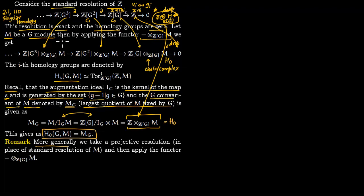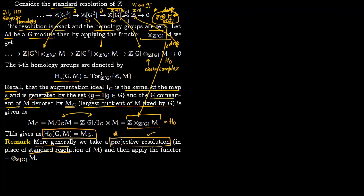More generally, rather than taking a free resolution we can take a projective resolution. But since all these modules in the standard resolution are free, it is also a projective resolution. For computations you take the standard resolution because we know how to deal with it — we know all the boundary maps since they just come from standard algebraic topology homology. So more generally, books say projective resolution in place of standard resolution. If you have a projective resolution you do the same story: you have projective modules, apply the tensor functor, get a complex, and compute its homology groups. They will be the same, but the standard resolution is more concrete.